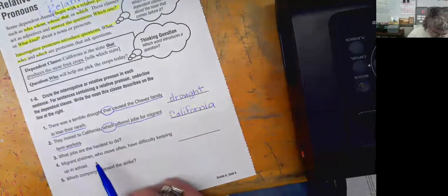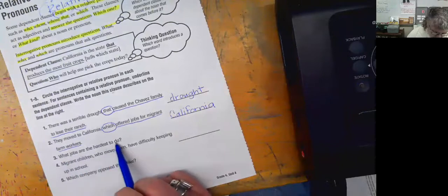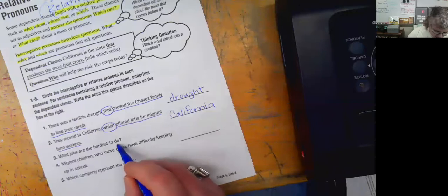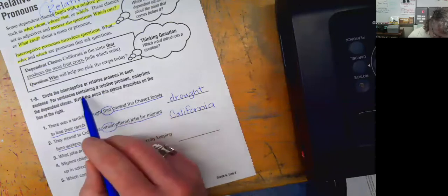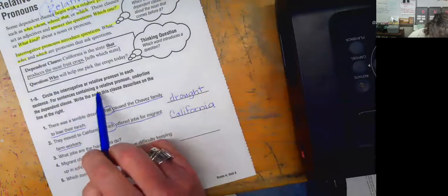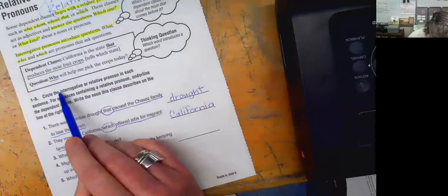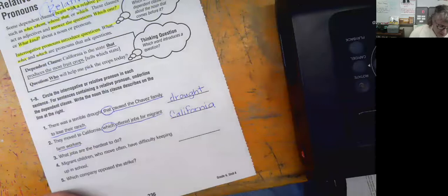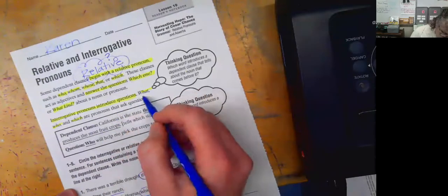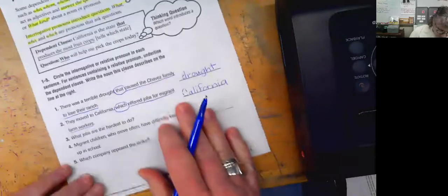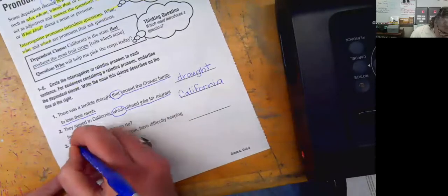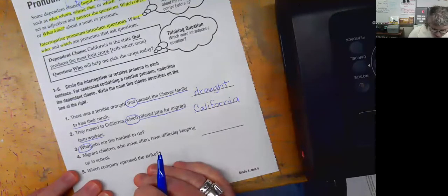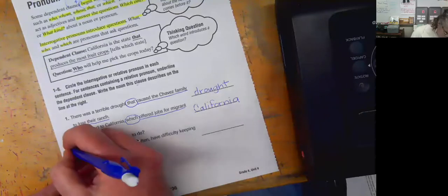Okay, here we go. What are the hardest to do? What jobs are the hardest to do? This one's interrogative. So all we have to do is find the, let's see, for sentences containing, underline, circle the interrogative or relative pronouns. So all we have to do is circle the interrogative pronoun. So we're looking for, if it's interrogative, we're looking for what, who, and which. What jobs are the hardest to do? Right?